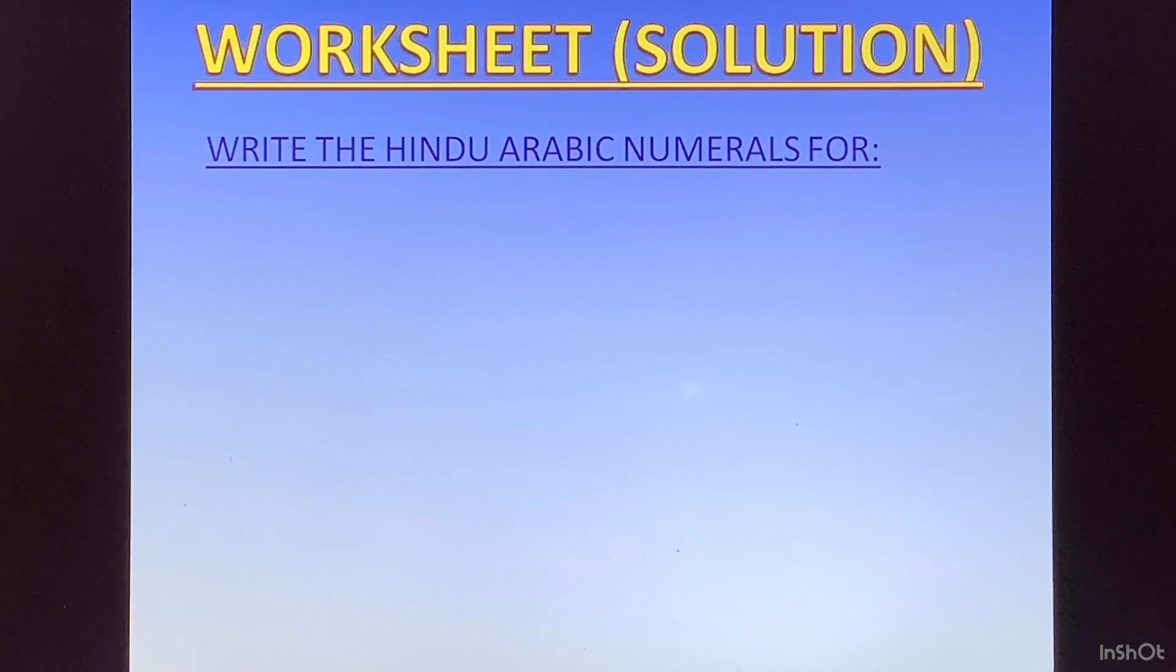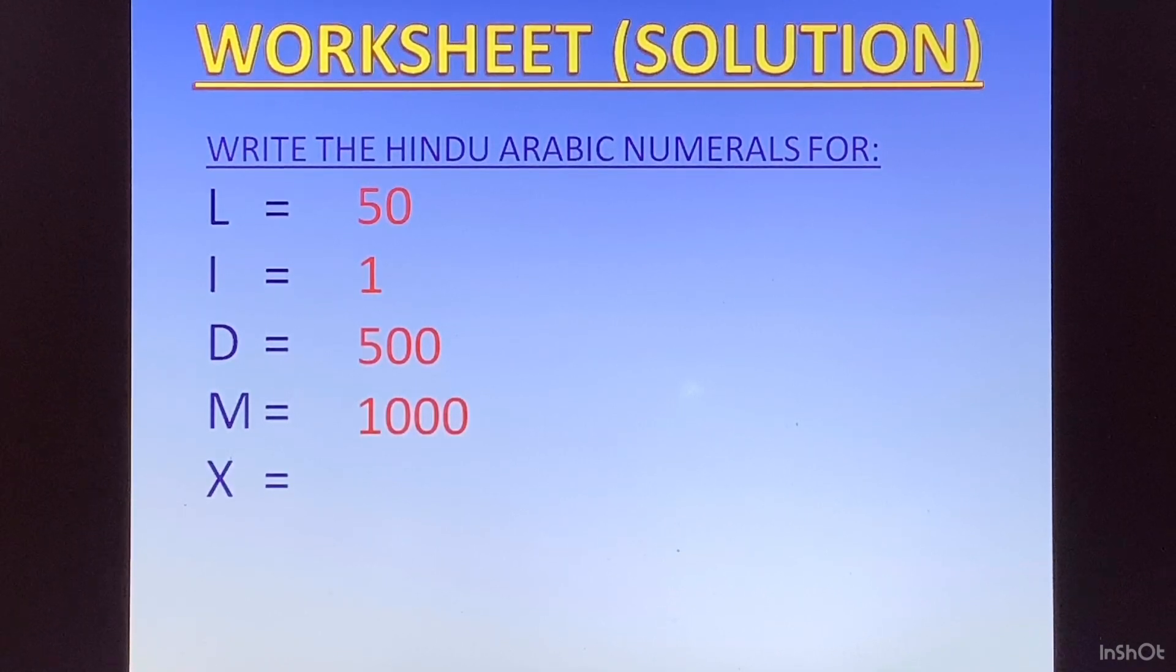Now let us look at the solutions. First was L which means 50, next I which means 1, then D is 500, M is 1000, X is 10, C is 100, V is 5. Now give yourself one mark for each correct answer. So these are seven parts. If you got all correct, you will get seven marks.